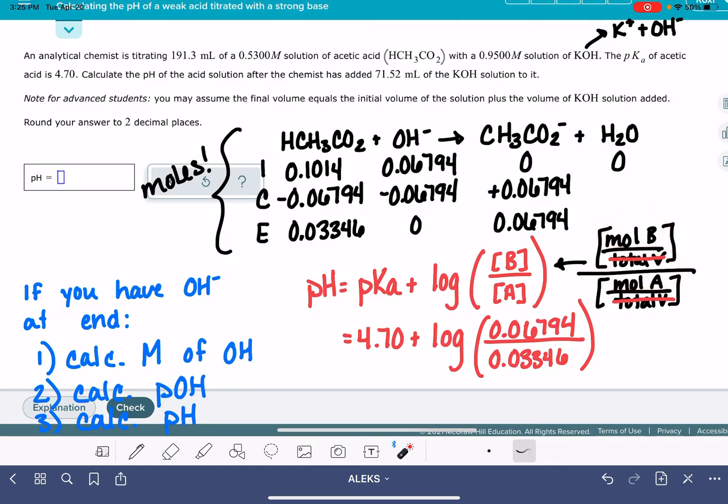Now if that makes you nervous, you can go ahead and calculate molarity, and you can fill that in, and you're going to get the same answer. So what I'm doing right now is I just worked out this side of the equation, and then I'm going to add 4.70, and I get an answer of 5.01 to two decimal places.